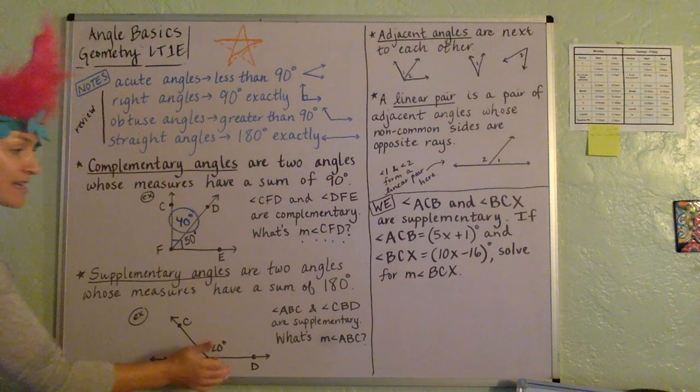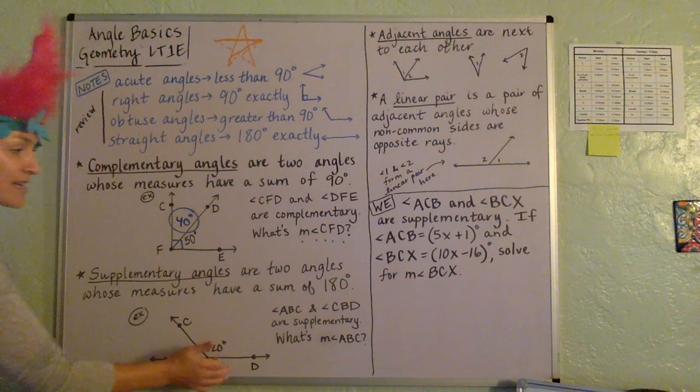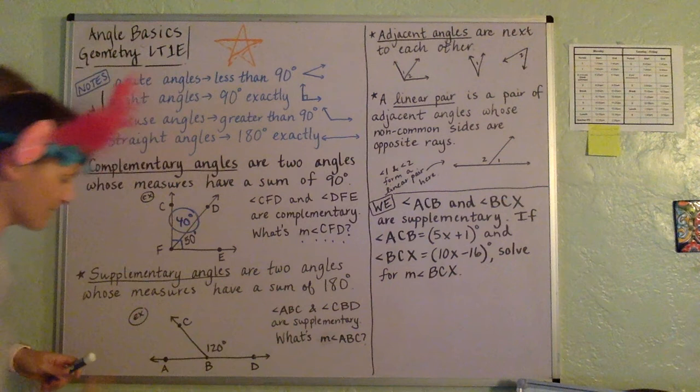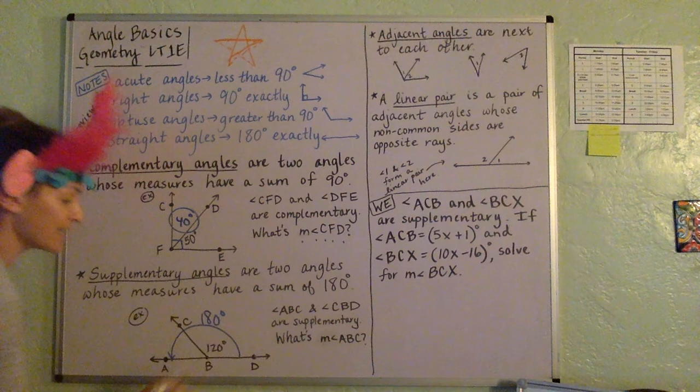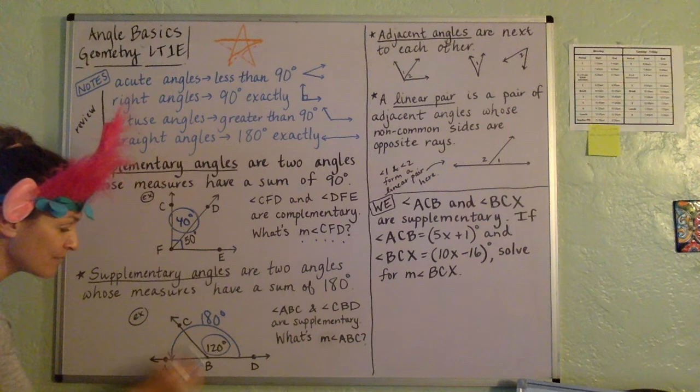So when they're supplementary, that means that they add to 180 together. So what's the measure of angle ABC? So if we know that these two together is 180 degrees, and we've accounted for 120 of it, well then that means that the measure of angle ABC has got to be 60 degrees.